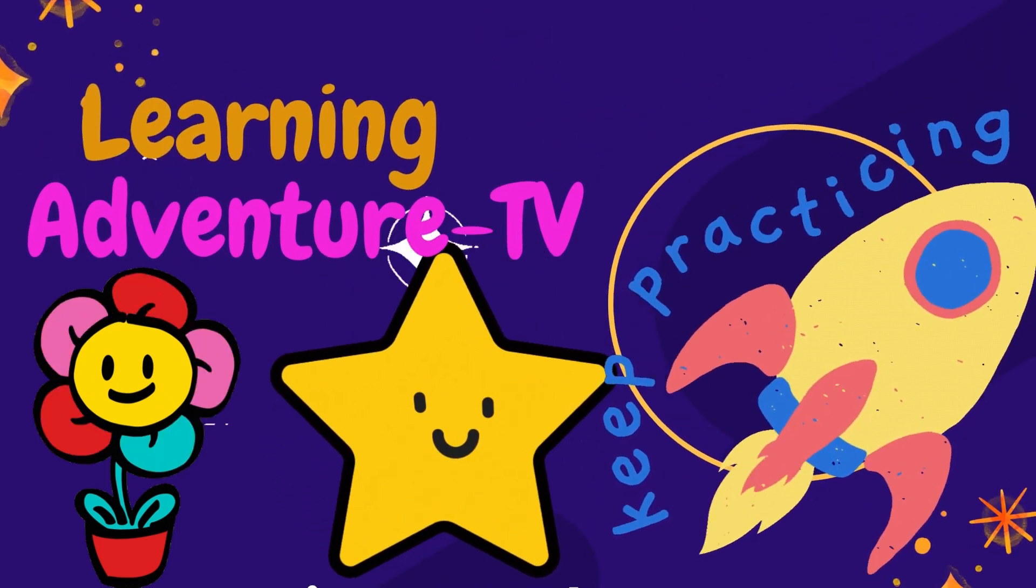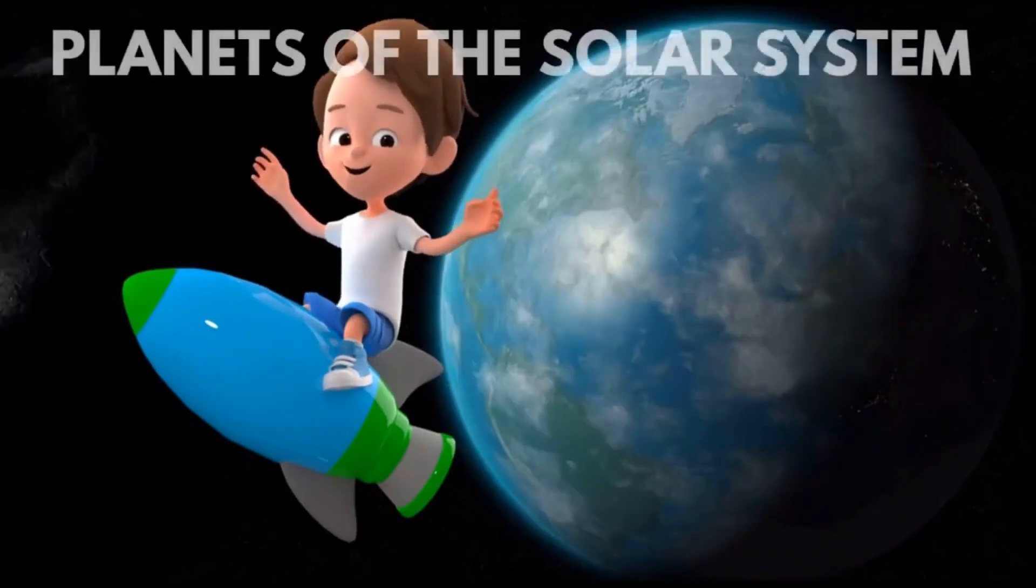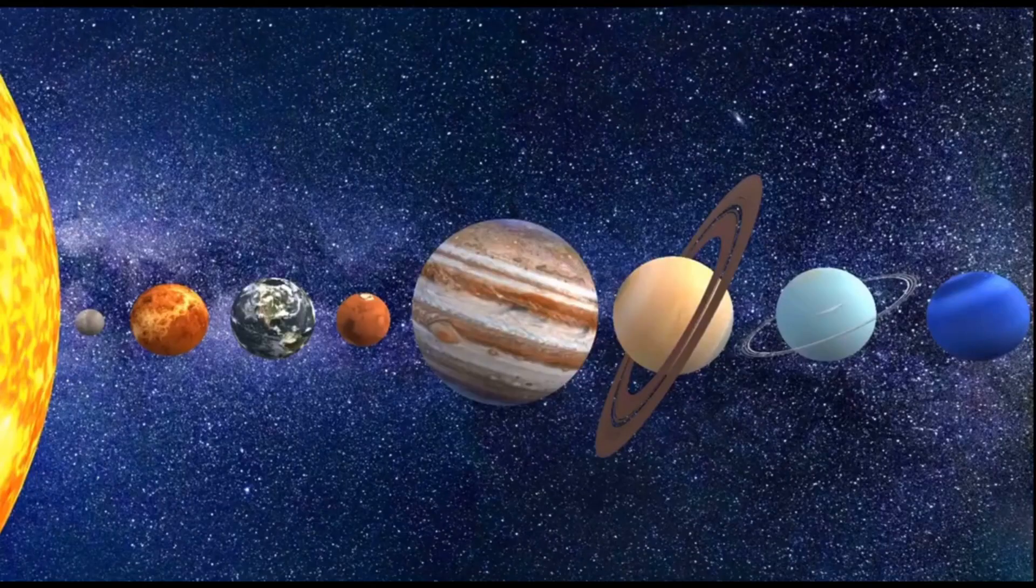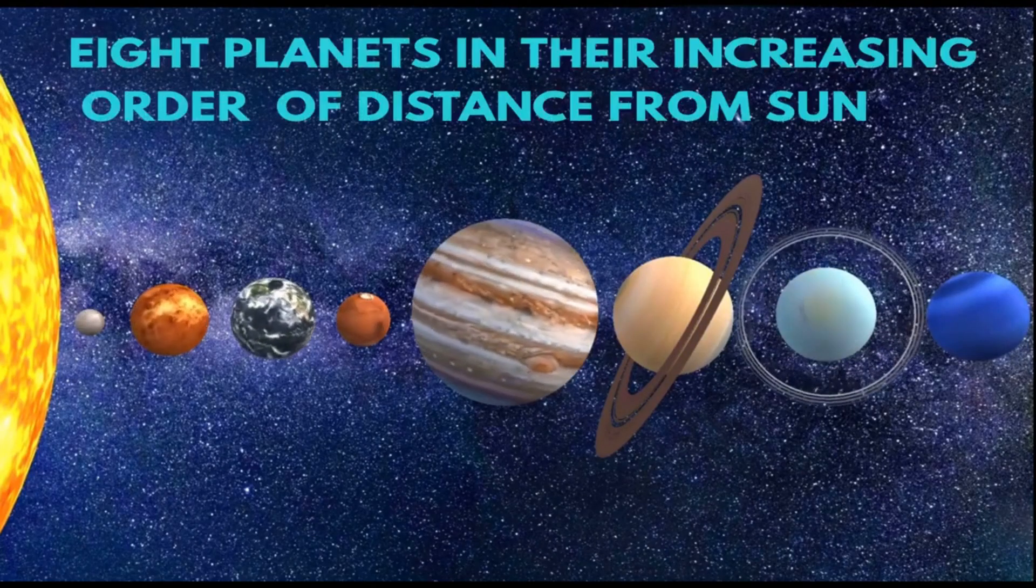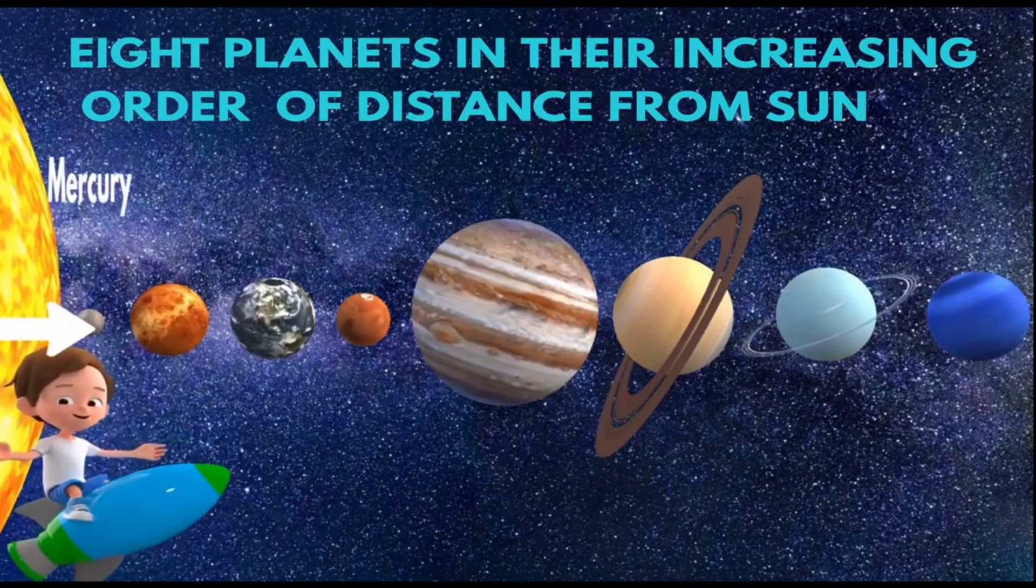Learning Adventure TV: Planets of the Solar System. The eight planets in their increasing order of distance from the sun are Mercury,